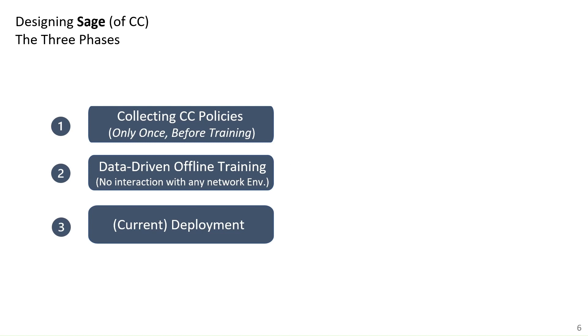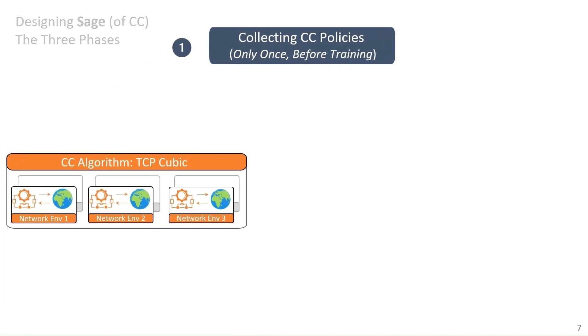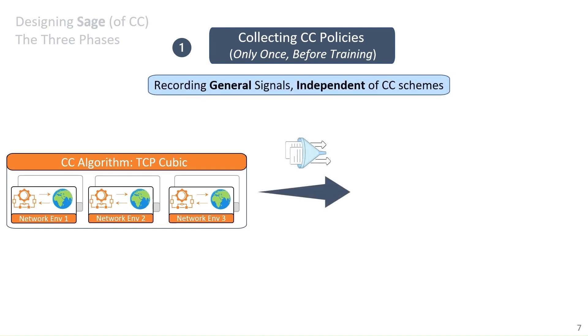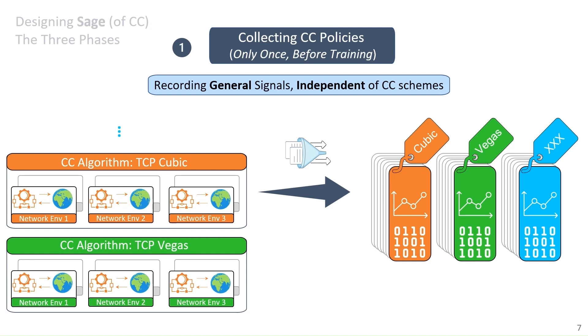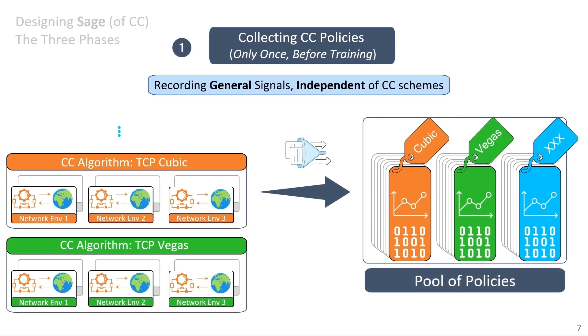Design of SAGE consists of three phases. The first phase, we collect congestion control policies. For example, assume we're trying to collect TCP cubic's behavior. We'll let different flows go through different network environments using TCP cubic, of course, and then we collect and record some general signals independent of TCP cubic or any congestion control scheme, to be honest. And then we filter them out and make a so-called dataset of cubic representing its behavior in different settings. Then you can imagine we add more schemes here. This would be Vegas and whatever scheme you like. And then at the end, we will get this pool of policies, pool of existing policies.